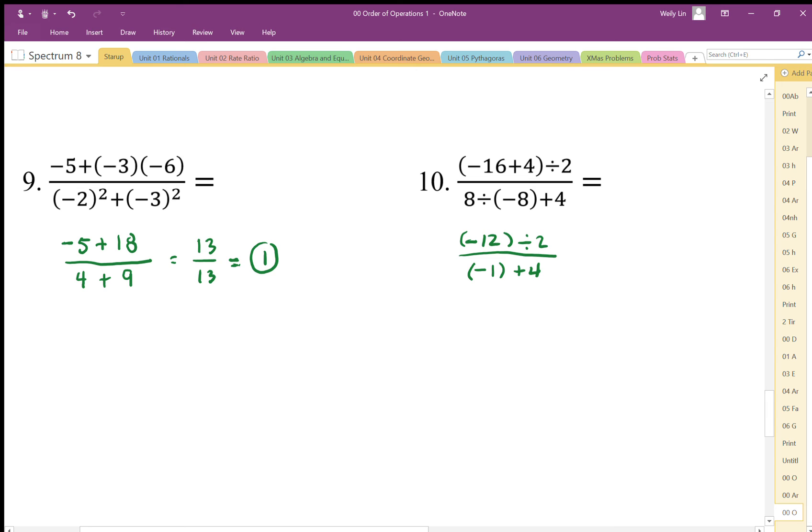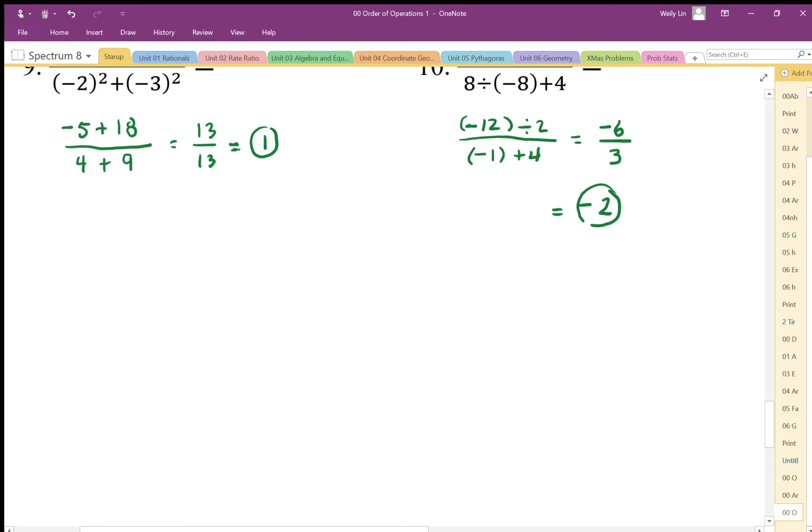Plus 4, so negative 12 divided by 2 is going to be negative 6. Negative 1 plus 4 is positive 3. Negative 6 divided by positive 3 is negative 2. Make sure you're showing steps for these.